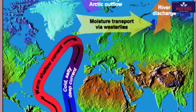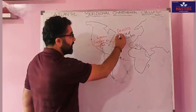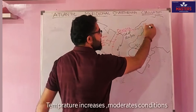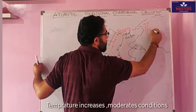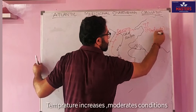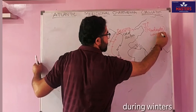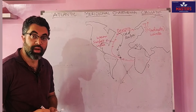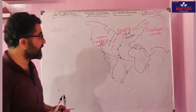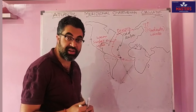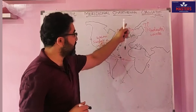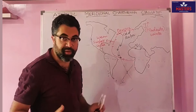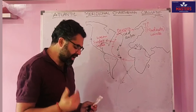What is the benefit of this entire phenomenon? The warm water reaches subpolar areas, so temperature increases — or rather, it moderates conditions, especially during winters. The moderation of climate that takes place in northern and European regions is caused by these warm oceanic circulations, which is quite beneficial for European regions.